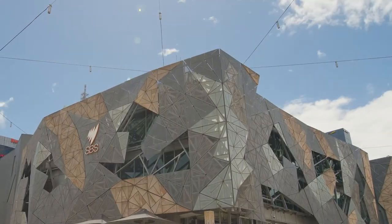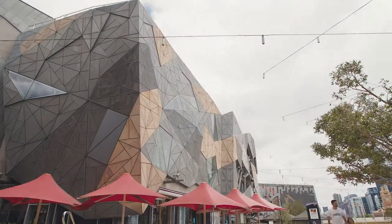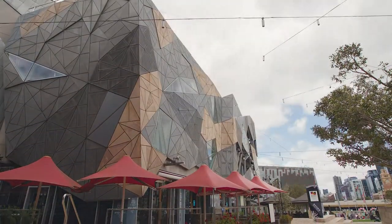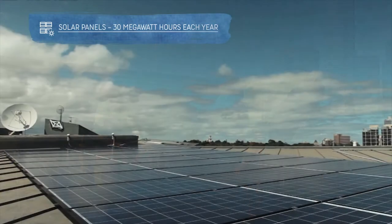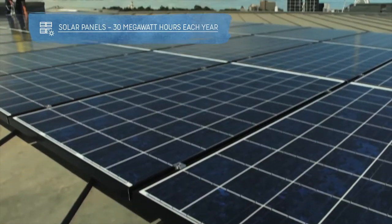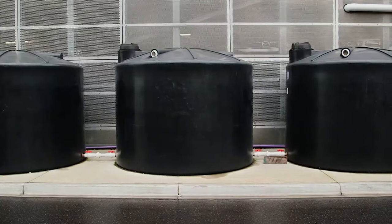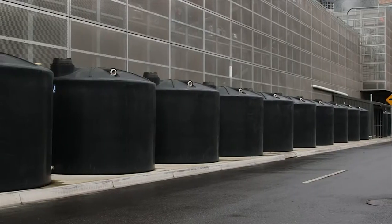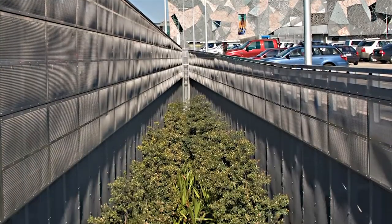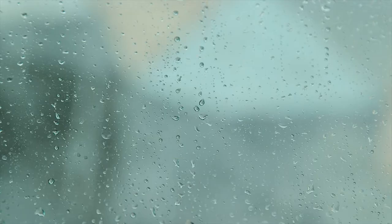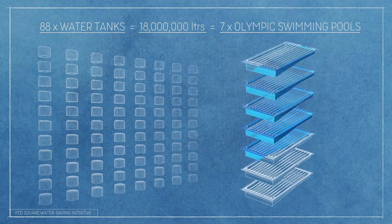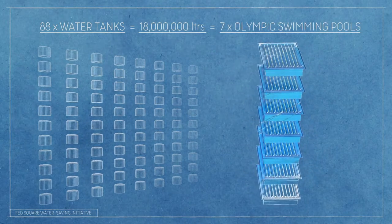But Fed Square's sustainability initiatives reach far beyond the underground labyrinth. High above ground, solar panels sit on the roof level, generating 30 megawatt-hours of power per year. While 88 water tanks and other water-saving initiatives collect almost 18 million litres of rainwater that is used in Fed Square's bathrooms. That's over seven Olympic swimming pools worth of water saved each year.